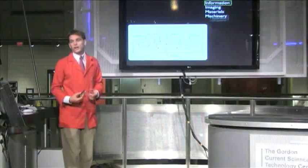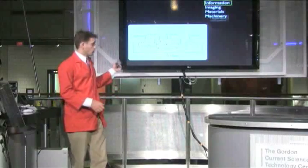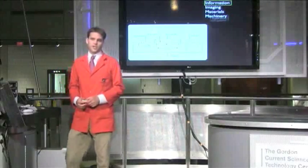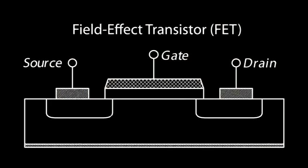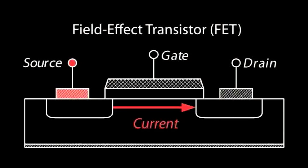Miniaturization has also obviously changed the way we process information, due largely to what I would argue is the most important invention of the 20th century: the field-effect transistor. The transistor is the basis of computer processing technology and also of computer memory. It controls a flow of electricity from the source to the drain by the application of an electrical voltage to the gate. It's basically a switch.